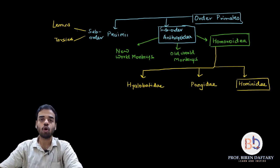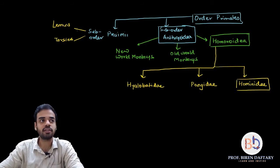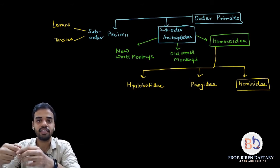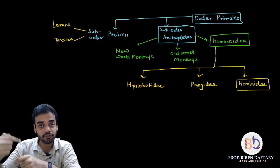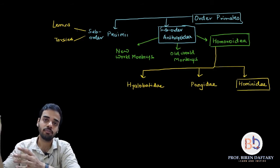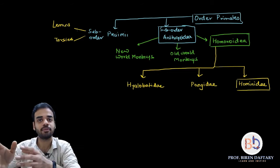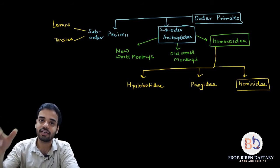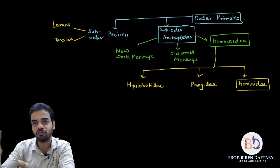Suborder Anthropoidea is divided into three parts: New World Monkeys, Old World Monkeys, and Hominoidea. Most monkeys were originally in Africa; some migrated to South America and those are called New World Monkeys. Both groups evolved together — it's not that one evolved before the other.